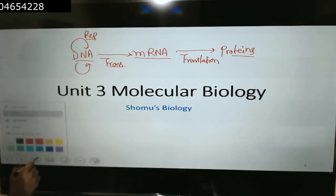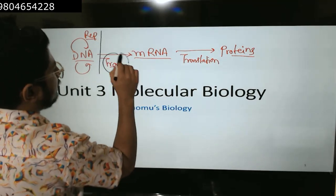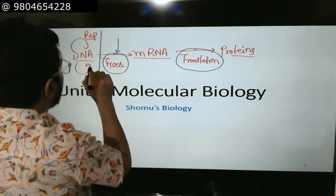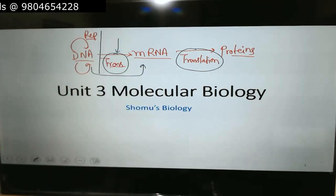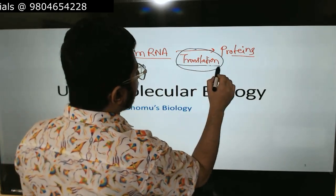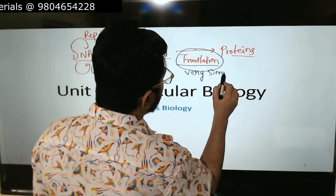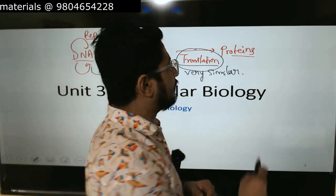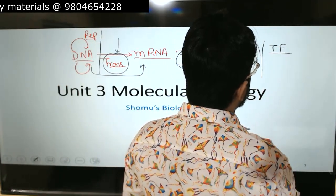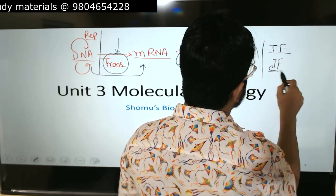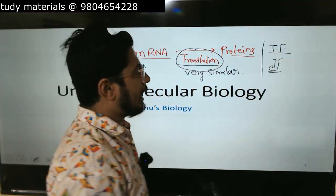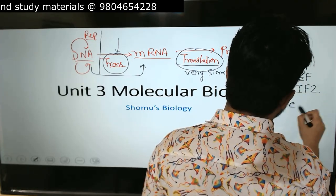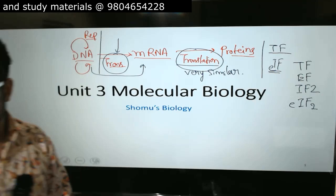The difference between eukaryotic and prokaryotic replication, transcription, and translation — the maximum difference is observed in transcription, in how RNA is produced from DNA. Translation is very similar between eukaryotes and prokaryotes; the stages are similar. The only difference is the translation factors: in eukaryotes we write them with a small 'e', such as eIF2, while in prokaryotes we simply write IF2.